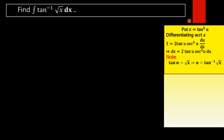On differentiating x = tan²(u) with respect to x, we get 1 = 2·tan(u)·sec²(u)·(du/dx), using implicit differentiation. This implies dx = 2·tan(u)·sec²(u)·du.